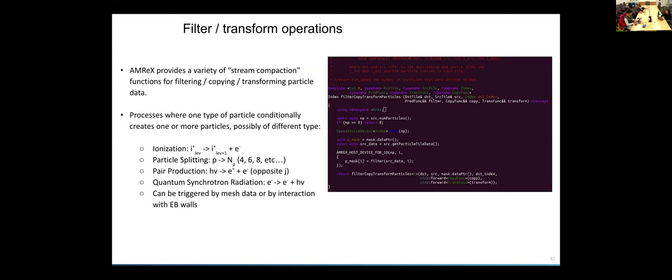This is another use of prefix sum, but we provide a variety of stream compaction functions for doing filter or copy or transformation operations on particle data. These are useful for implementing processes where one type of particle conditionally creates one or more other particles, possibly of a different type. There's a bunch of examples of operations like this: ionization is one, where an ion is turning into a different type of ion and also creating a free electron. Particle splitting, QED operations like pair production or quantum synchrotron radiation, all can be implemented in terms of these operations. These operations can be triggered by an interaction with the mesh data, say in regions where the electromagnetic fields are strong enough, you might want to start doing pair production, or they could be triggered by interaction with the embedded boundary geometry as well.